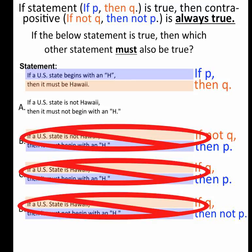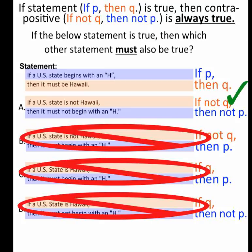But now let's look at A. If a US state is not Hawaii, if not Q, then it must not begin with an H, then not P. That is my contrapositive, so that must be true, and our answer is A.